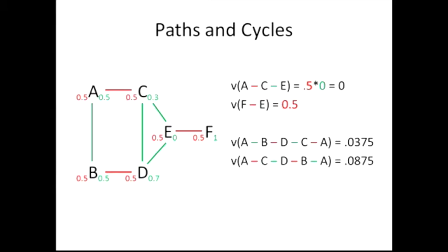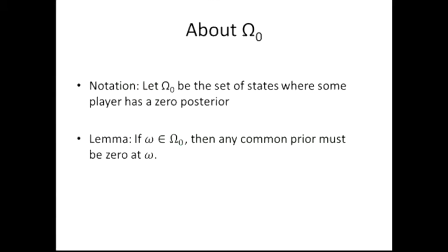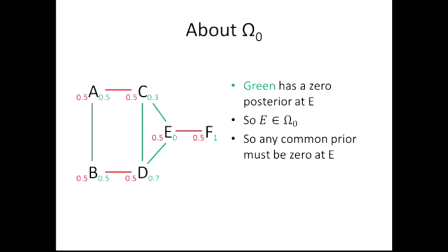Also, the direction of a cycle matters because we're taking the posterior at the endpoint only. Now for some results. If we call omega-naught the set of states where some player has a zero posterior — some player says they're putting zero posterior on that state — then any state with that property must have zero prior. Any common prior that exists has to be zero at that state. If green has a posterior of zero at E, then any common prior has to be zero at E. This is clear: if they had a positive prior, they would immediately have a positive posterior.